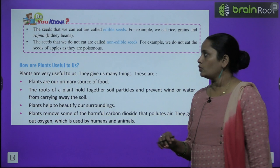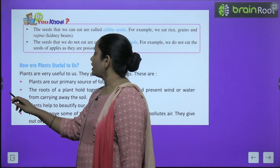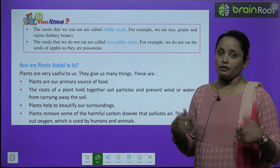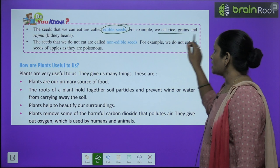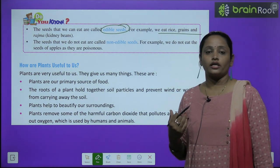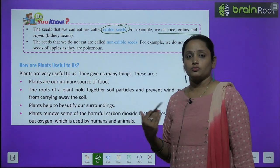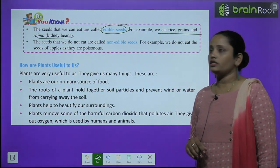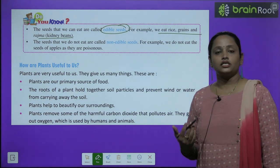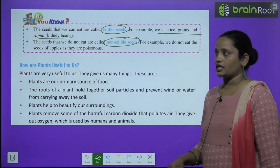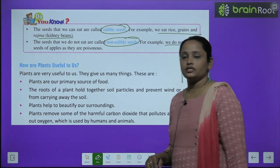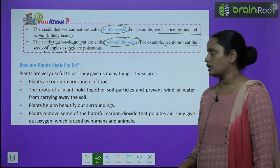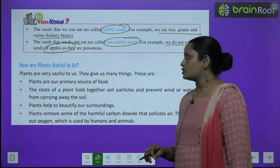Seeds that we can eat are called edible seeds — for example, we eat rice, grains and rajma. The seeds that we do not eat are called non-edible seeds. We do not eat the seeds of an apple as they are poisonous.